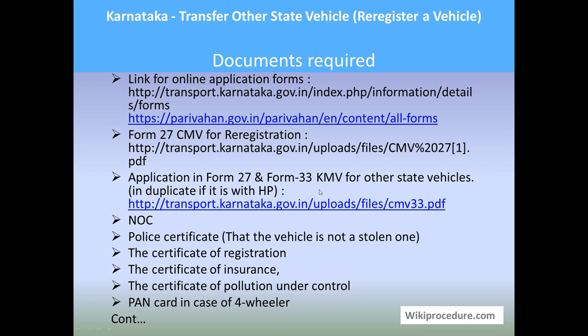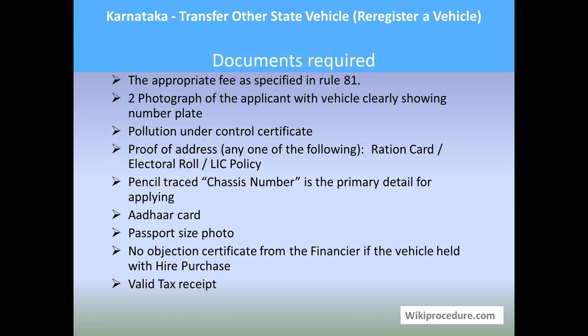You need the NOC from the home-state RTO where the vehicle was initially registered. A police certificate stating that the vehicle is not stolen should also be provided. You will also need the certificate of registration, the certificate of insurance, the certificate of pollution under control, a bank card in case of a four-wheeler, the appropriate fee as specified in Form 81, and two photographs of the vehicle clearly showing the number plate. A pollution under control certificate is also required.